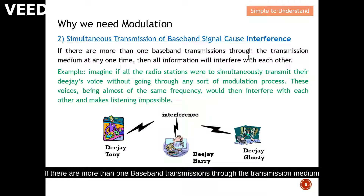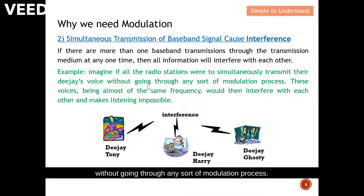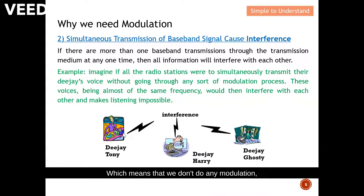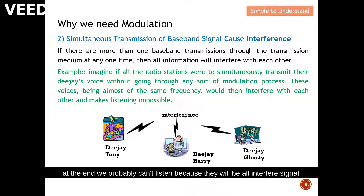If there are more than one baseband transmission through the medium at any one time, all information will interfere with each other. For example, imagine if all radio stations were to simultaneously transmit their DJ voices without going through any modulation process. These voices, being mostly the same frequency, would interfere with each other and make listening impossible. Without modulation, transmitting voices directly would create huge interference and we probably couldn't listen at all.